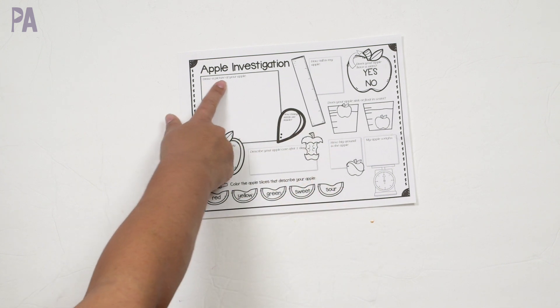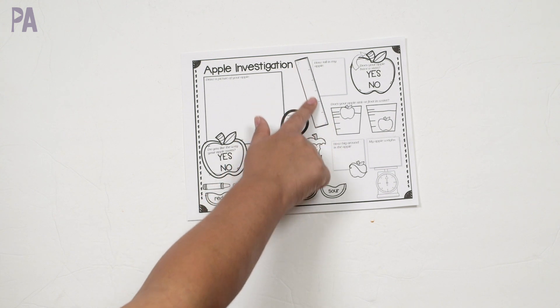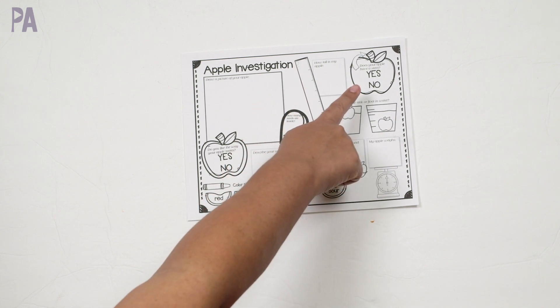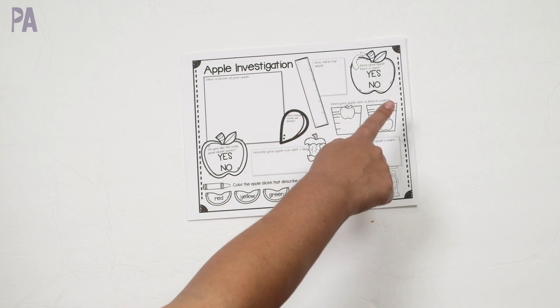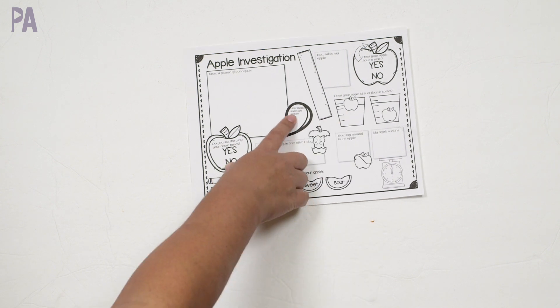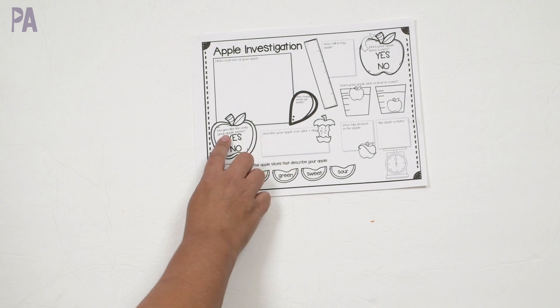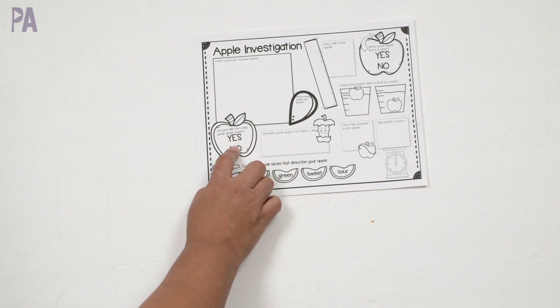I like that it has just basically a complete science observation in it all in one sheet. So this first one is to draw a picture of your apple, which they will do here. And then how tall is my apple? So you'll measure it. And then does your apple have a stem? Yes or no. Does your apple sink or float in water? So you'll just get a glass and see if it floats or not. You'll cut it open and ask you how many seeds are inside. So you'll do a seed count. And then do you like the way your apple tastes? So you get a little taste test.